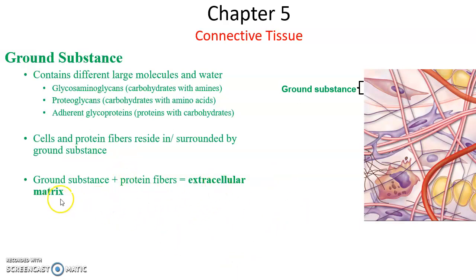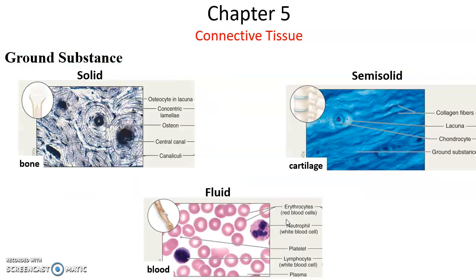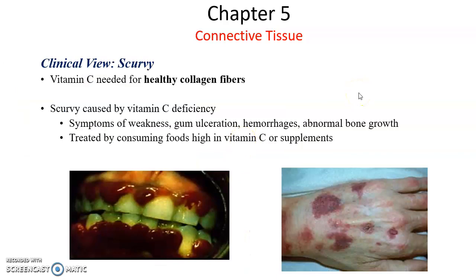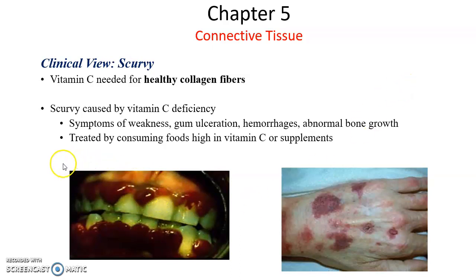The extracellular matrix is the ground substance plus the protein fibers. It can be solid, as in bones; semi-solid, as in cartilage; or fluid, as in blood. Collagen fiber is very important, but we need vitamin C to produce collagen properly. Scurvy is when you do not get sufficient vitamin C for a very long time. This can lead to weakening of the body as a whole, gum ulcerations, hemorrhaging in the gums, abnormal bone growth, hemorrhaging in other parts of the body, and bruising in the skin. To treat it, you just start adding vitamin C back into the person's diet.